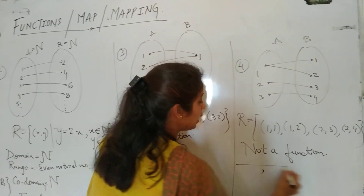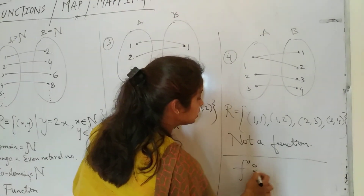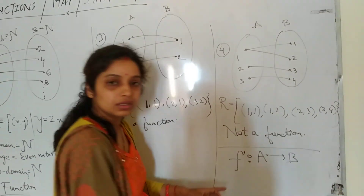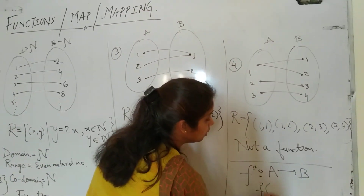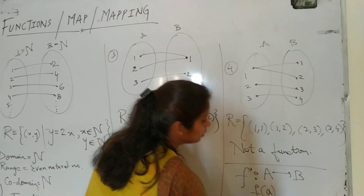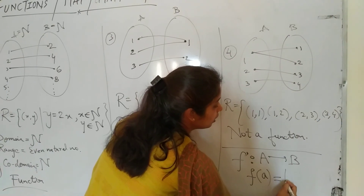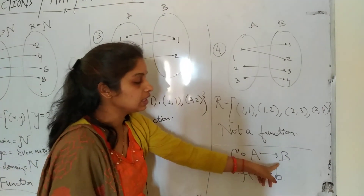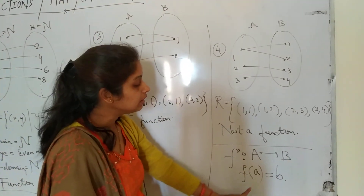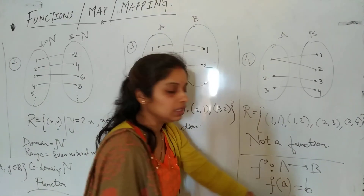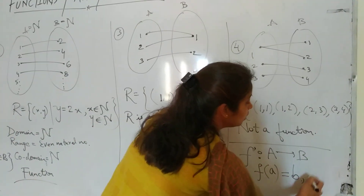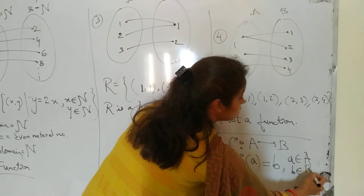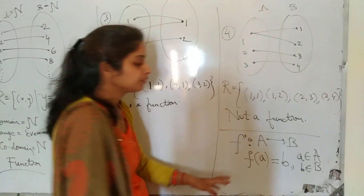A function f from a set A to a set B can be written as f(a) = b. If f is a function from set A to B, then we write f(a) = b, where a is from set A and b is from set B. This is the representation of a function.